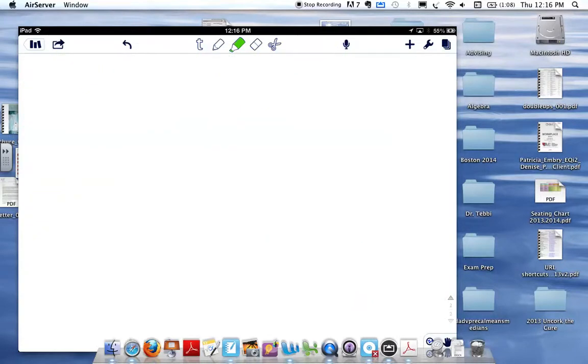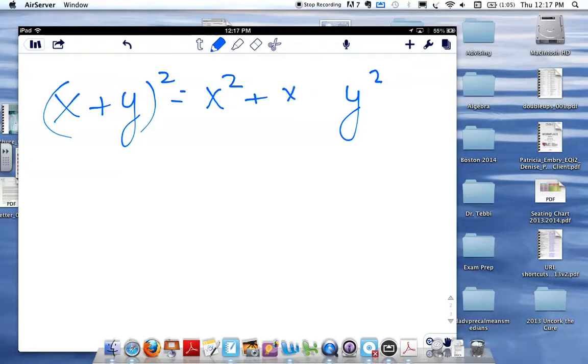And so the pattern that you should see is that x plus y quantity squared is the square of the first term. I'll skip to the end and say it's the square of the last term. And then it is the product of the two terms, doubled.